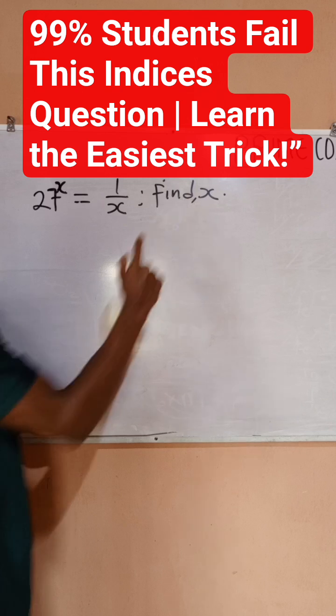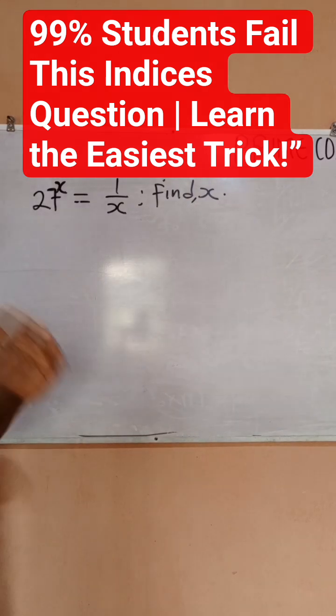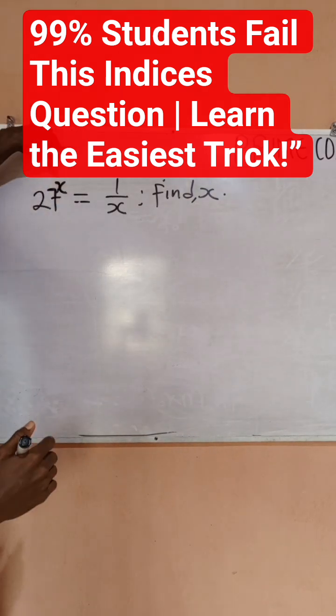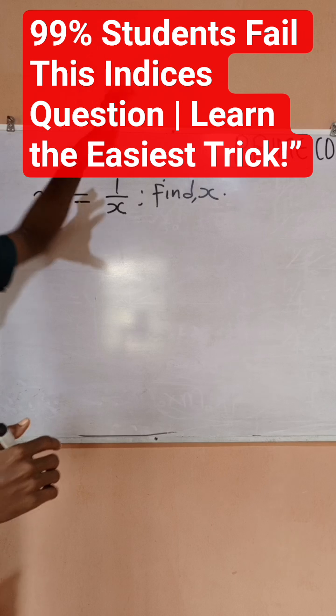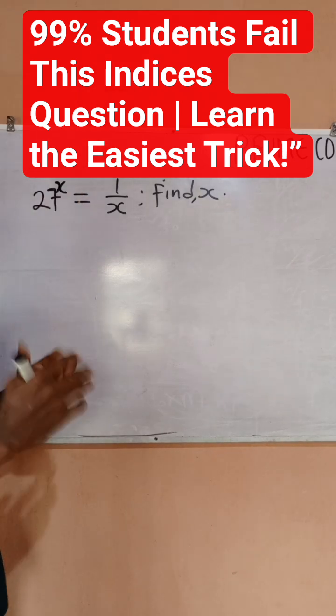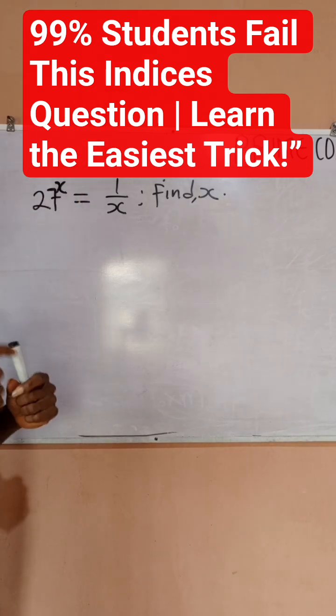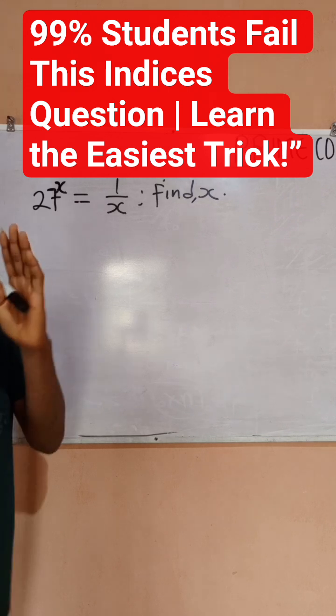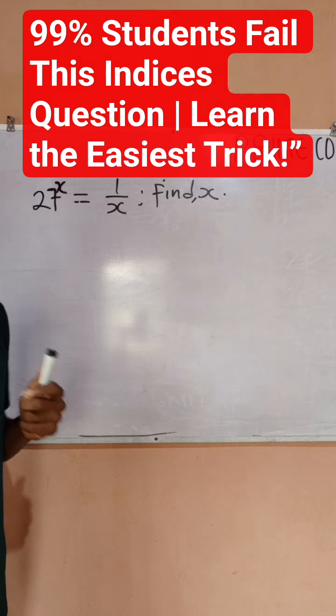To find x, you'll notice we have x as a power and we also have x here, so it won't be very easy to solve for x. One of the things you want to do is push x to only one side, because whenever you want to find a particular variable, you like that variable to be on one side.